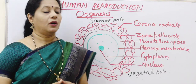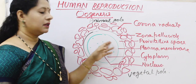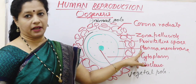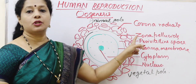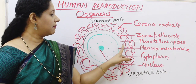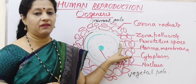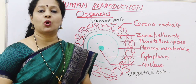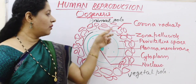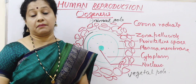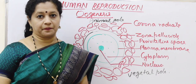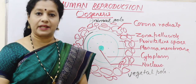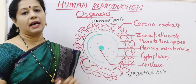The structure of the ovum: it consists of cytoplasm and nucleus surrounded by a plasma membrane. Outside that is the zona pellucida. Between the plasma membrane and zona pellucida is a small space called the perivitelline space. Around the zona pellucida, follicular cells form the corona radiata, held together by hyaluronic acid. The ovum has two poles — the animal pole and the vegetal pole — and the sperm always enters through the animal pole.